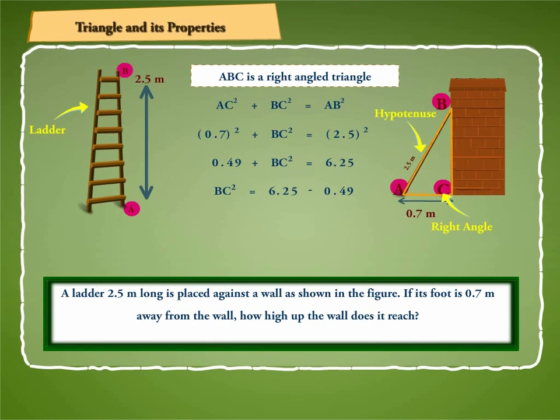or BC square is equal to 6.25 minus 0.49 is equal to 5.76 is equal to 2.4 square, which gives us BC is equal to 2.4 meter.